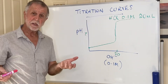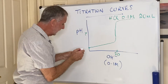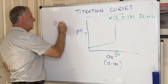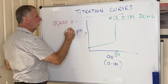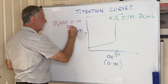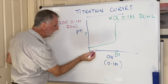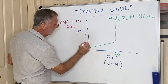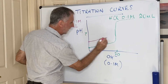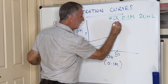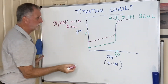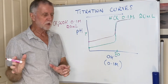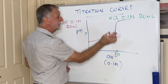If we use a weak acid with a strong base — say ethanoic acid, CH₃COOH, again at 0.1 mol/L and 20 mL — since it's a weaker acid it would start at a higher pH and follow almost exactly the same kind of curve: it would go up and then shoot up over there. So again there would be a vertical section.